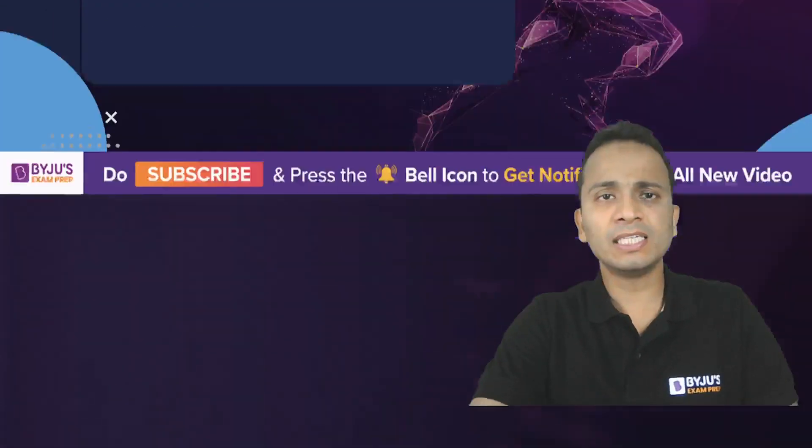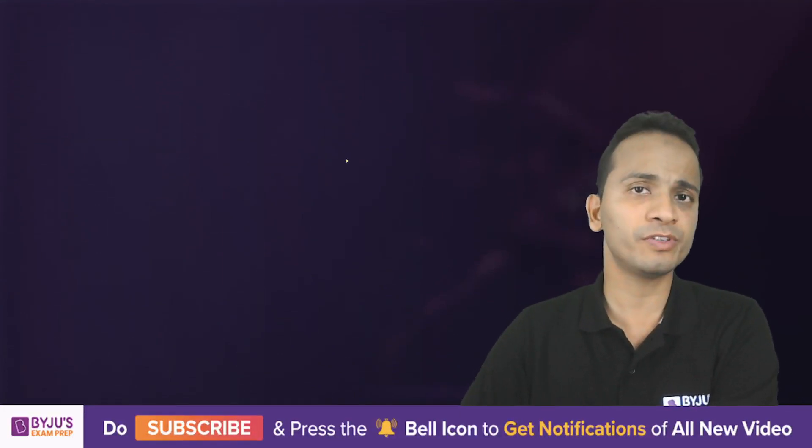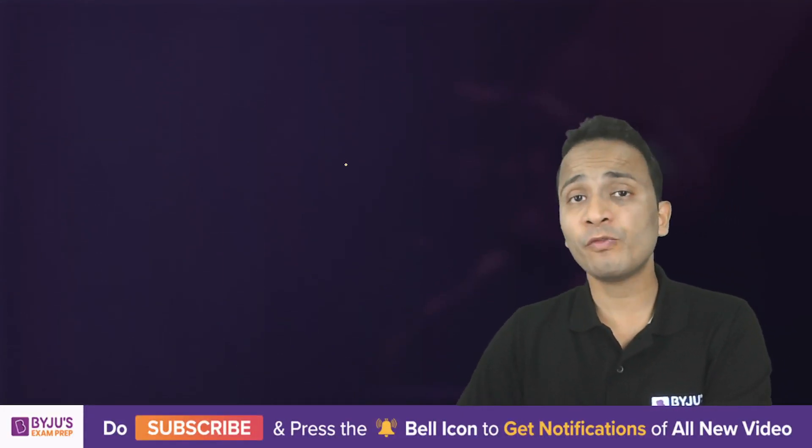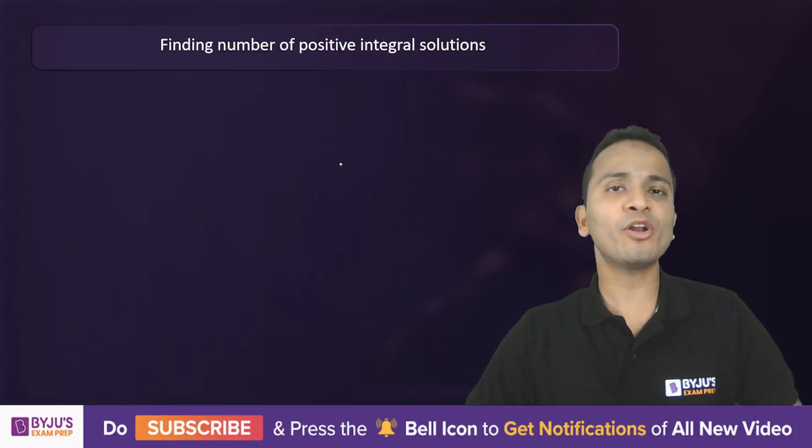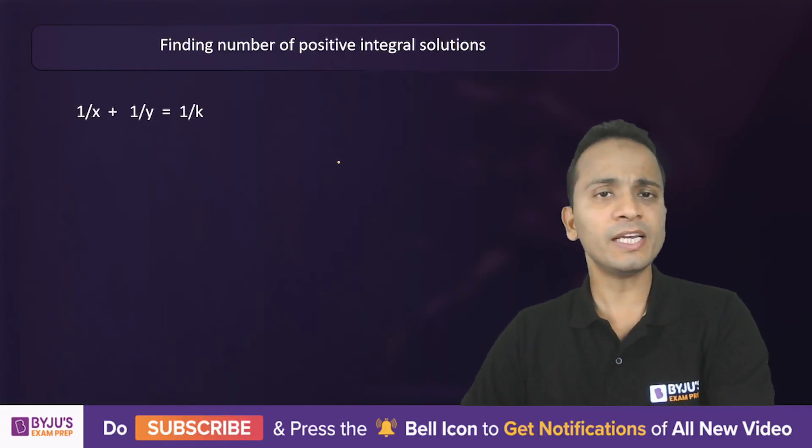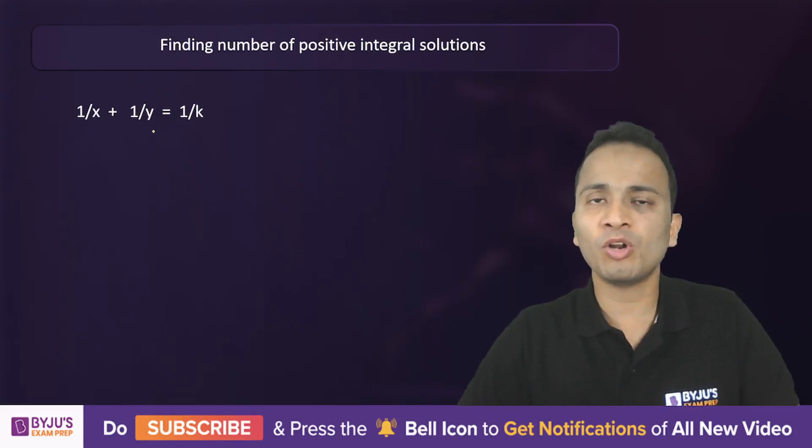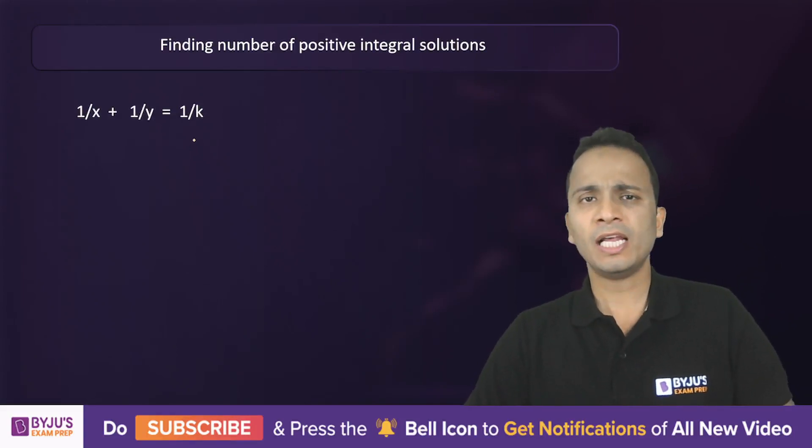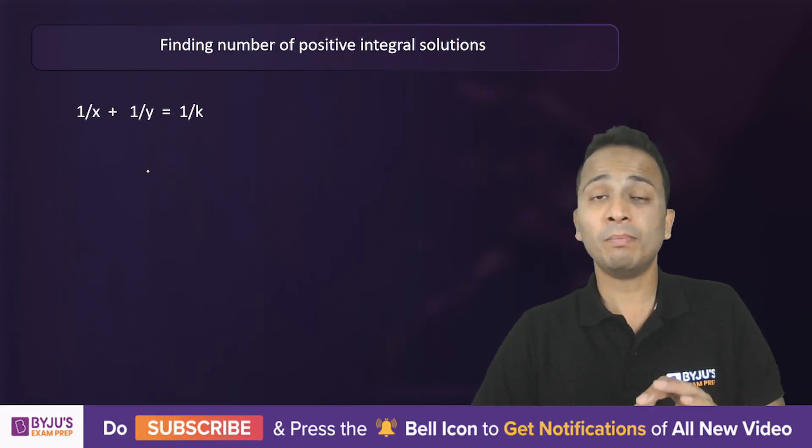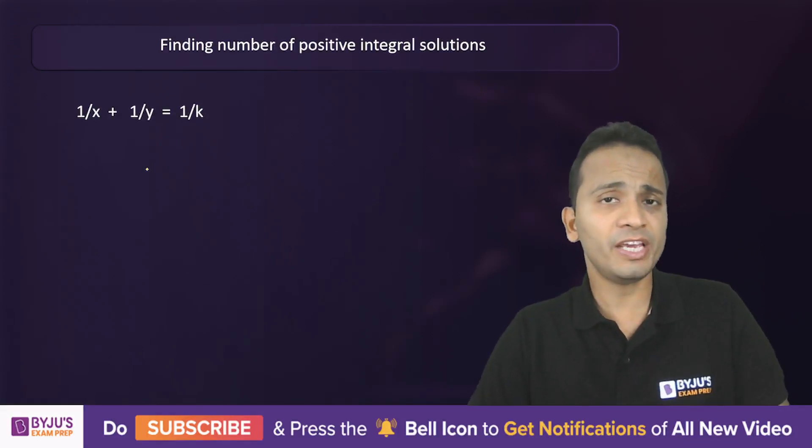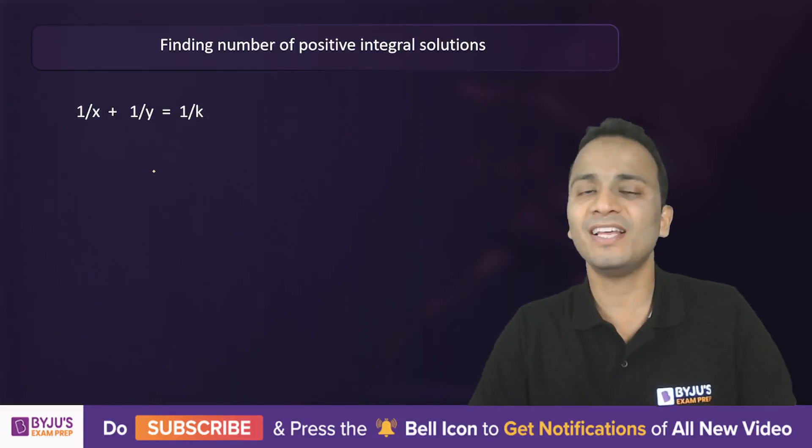Let's have a look at the generalized form of this equation for which we are going to find out the number of positive integral solutions. This is the equation: 1/x + 1/y = 1/k. The task is to find out the number of positive integral solutions. You might be having different ways of solving this question, but I'll give you one way using which you'll be able to do this question in less than 20 seconds - yes, believe me.